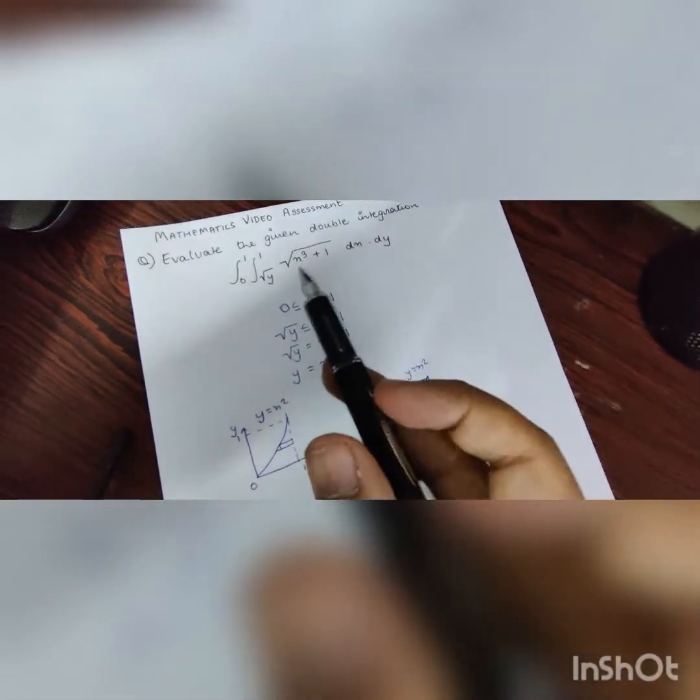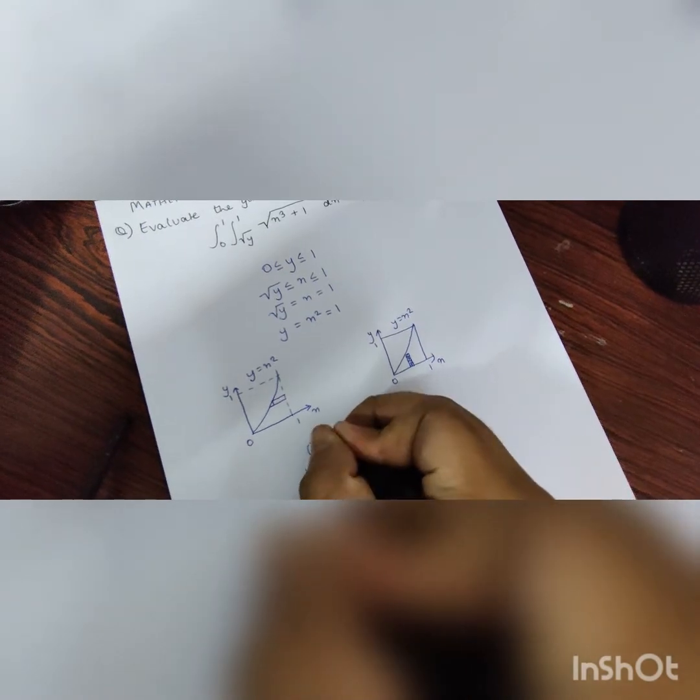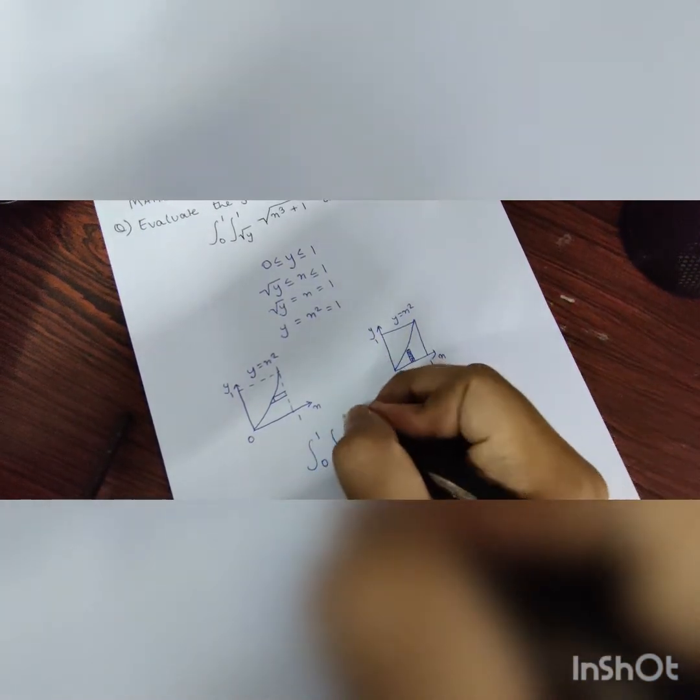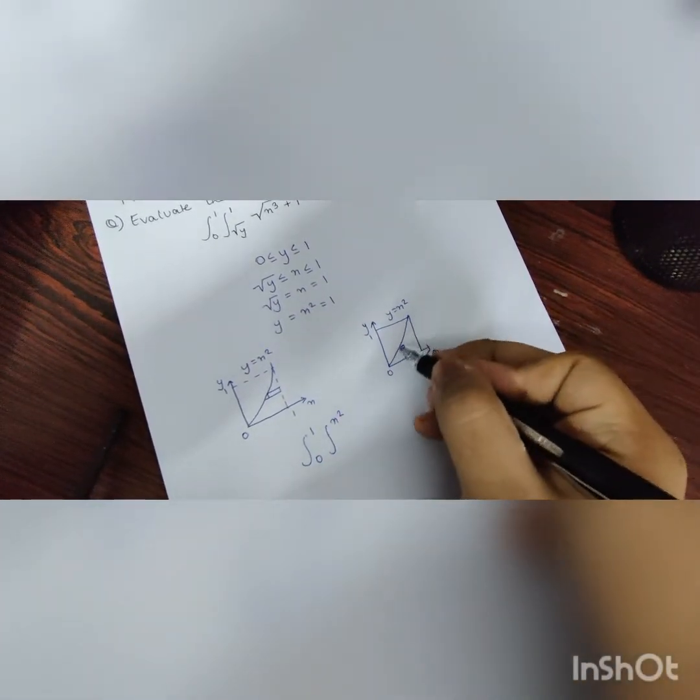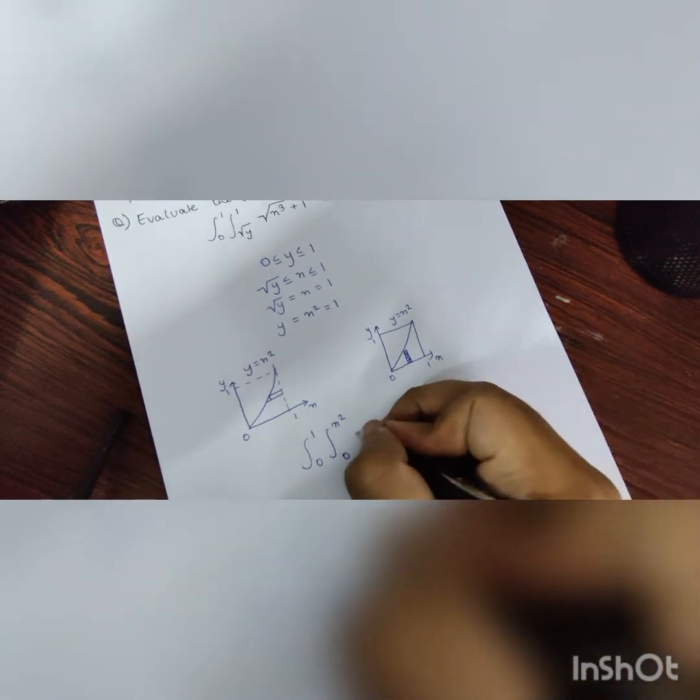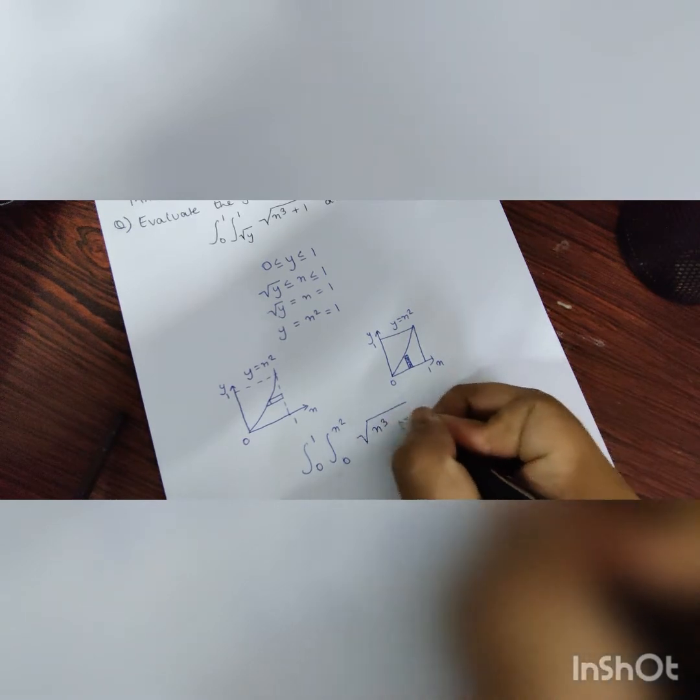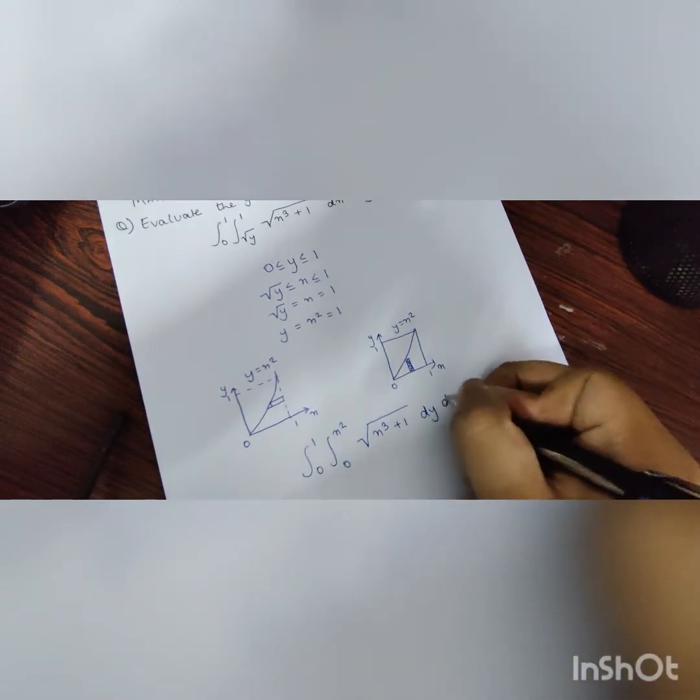So, we can rewrite the initial equation as integration from 0, the upper limit will be x squared, to 0, and then x³ plus 1, dy dx.